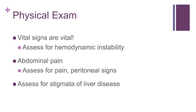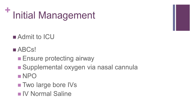Similarly, the initial physical evaluation should serve to help you narrow your differential and also assess the patient's clinical stability. Vital signs should be noted and any patient with tachycardia or hypotension should be presumed to be unstable. An abdominal exam should be performed to assess for pain and rebound tenderness. Patients with peritoneal signs should be assessed for perforation with an upright abdominal film. If a history of alcohol abuse is obtained, the patient should be assessed for stigmata of liver disease. Any patient with acute ongoing blood loss or evidence of hemodynamic instability such as shock or orthostatic hypotension should be admitted to an ICU for further care.